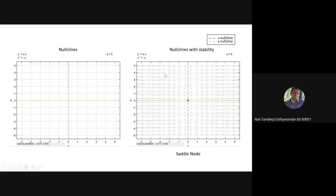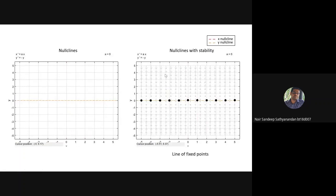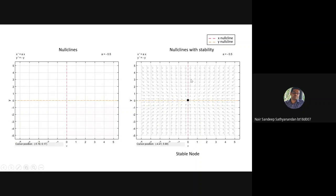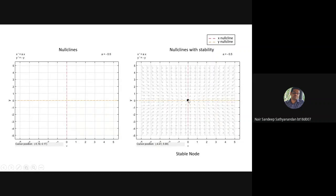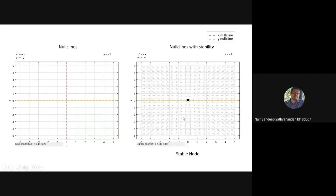In the pplane tool, the line of fixed points case arises when we set a = 0 in the equation x-dot = ax and y-dot = -y. When a equals zero, it results in a line of fixed points. When a is a negative value, it becomes a stable node — from whichever initial point we start, it will converge to the center.